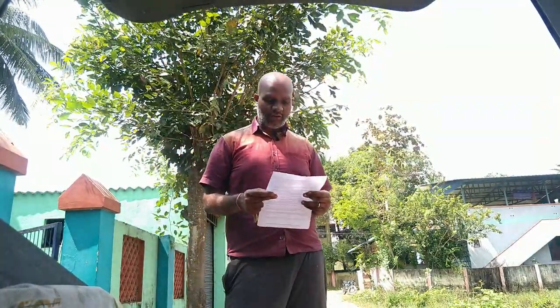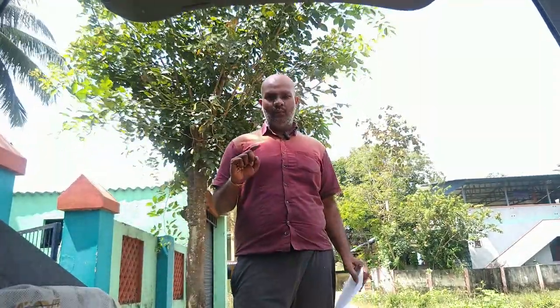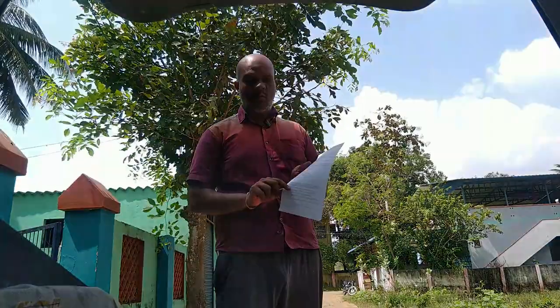The consulate officer will contact you if there is a need for additional documents. If no additional documents are needed, the consulate officer will take a decision on approving or denying your visa. There is also a caution: if you fail to follow the instructions given in the 221g letter within one year, your application will expire. Every visa applicant has a period of one year within which they have to take action.